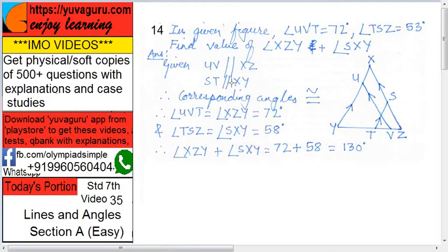So, what happens? UVT equals to XZY because corresponding angles, but UVT, we already know 72. So, XZY becomes 72. Similarly, TSZ equals to SXY. Why? Because these two lines are parallel. So, these two angles become corresponding. So, they are equal, but what is TSZ? 53.